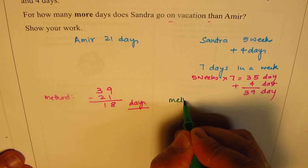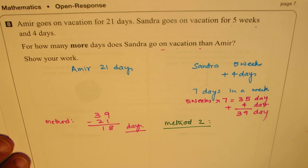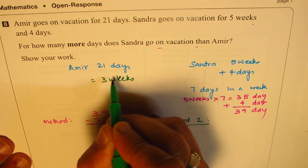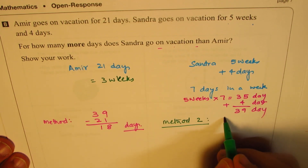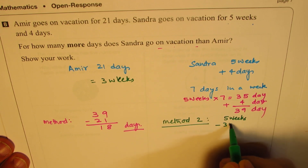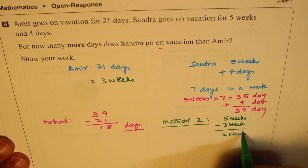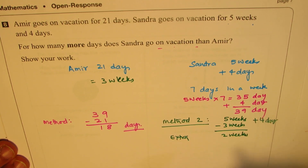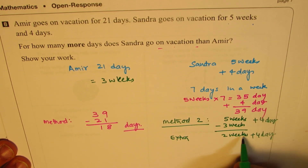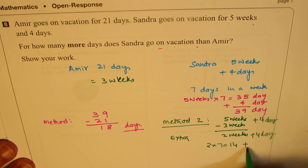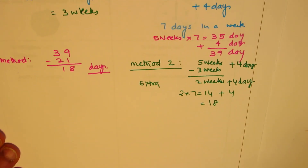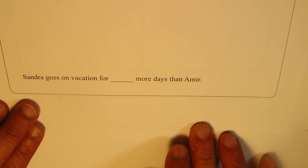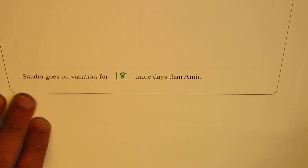Let me show you method 2. We convert 21 days into weeks: 21 days is 3 weeks. Now we do 5 weeks minus 3 weeks, which means 2 weeks. Sandra is on holiday for 5 weeks and 4 days, so the extra time is 2 weeks and 4 days. 2 weeks means how many days? 2 times 7, which is 14, plus 4 gives us 18 days. So in either way it is 18 days — Sandra goes 18 days more than Amir.